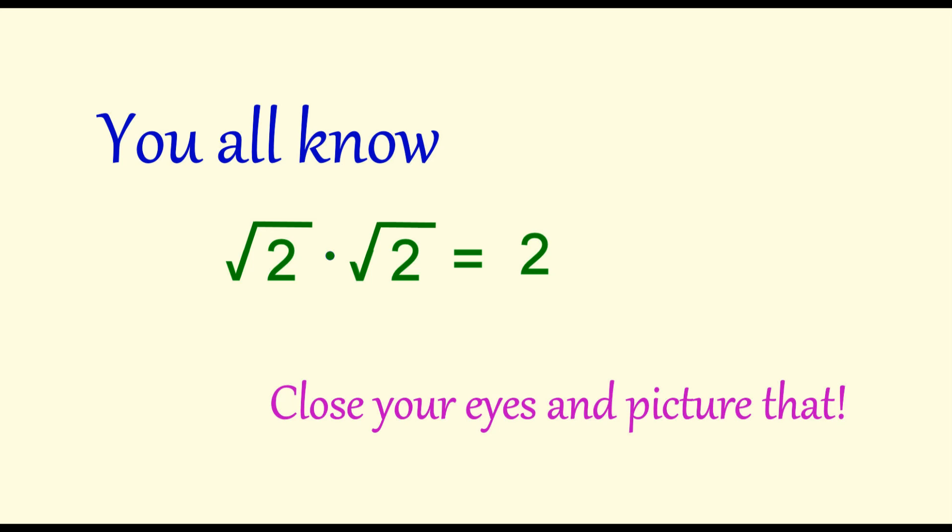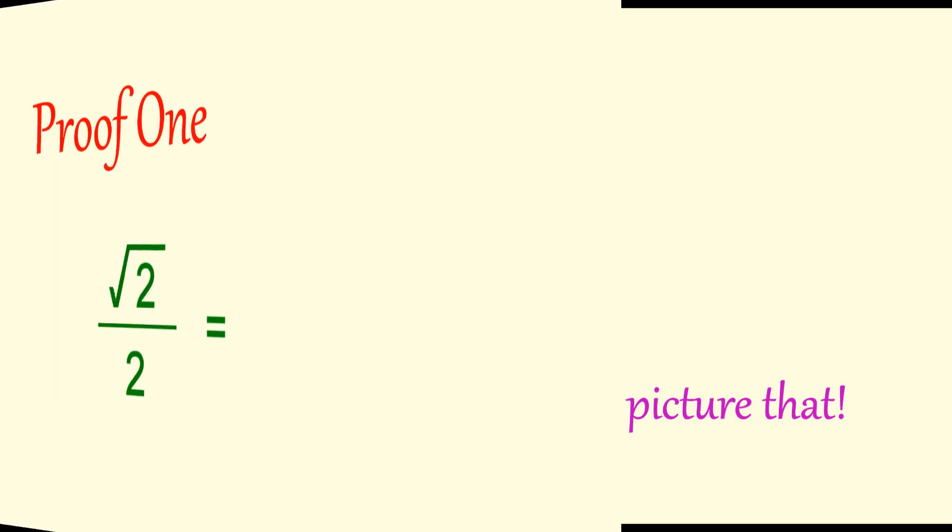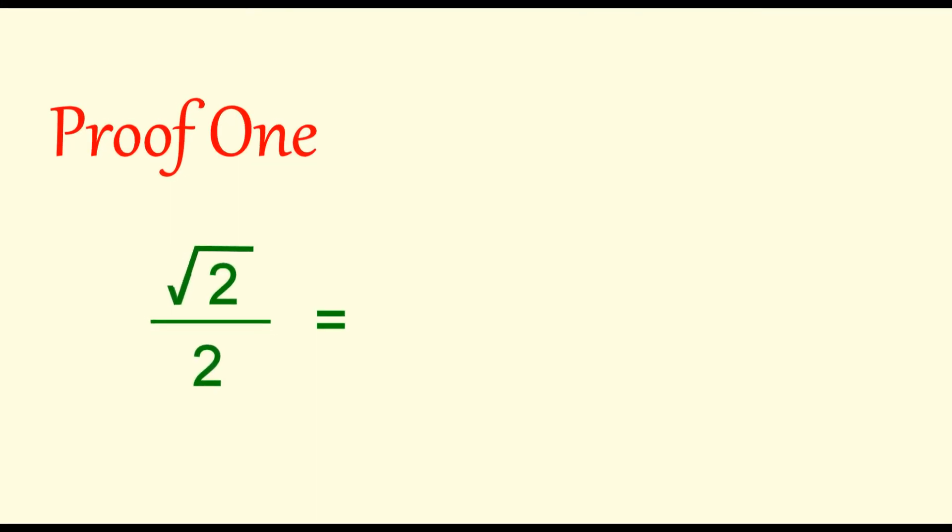Here's the first proof. We'll start out with square root of 2 over 2. We'll copy the numerator, but we'll take 2 in the denominator and make that square root 2 times square root 2. Now look what happens. A square root 2 cancels from the top and bottom. And that leaves 1 over square root 2.